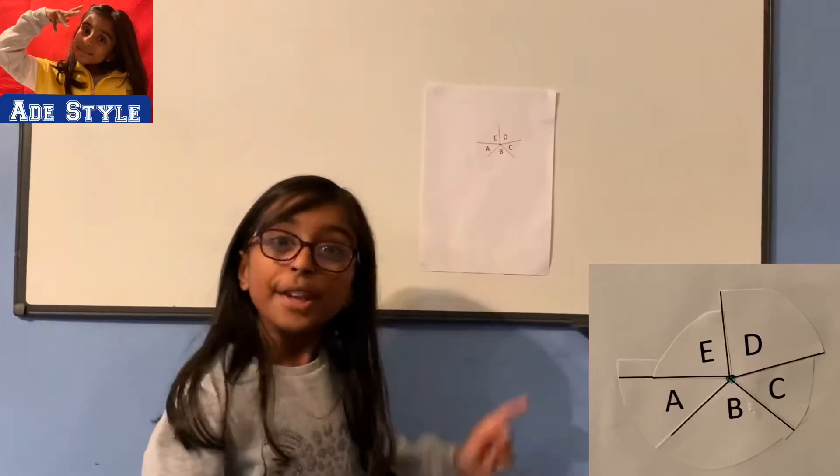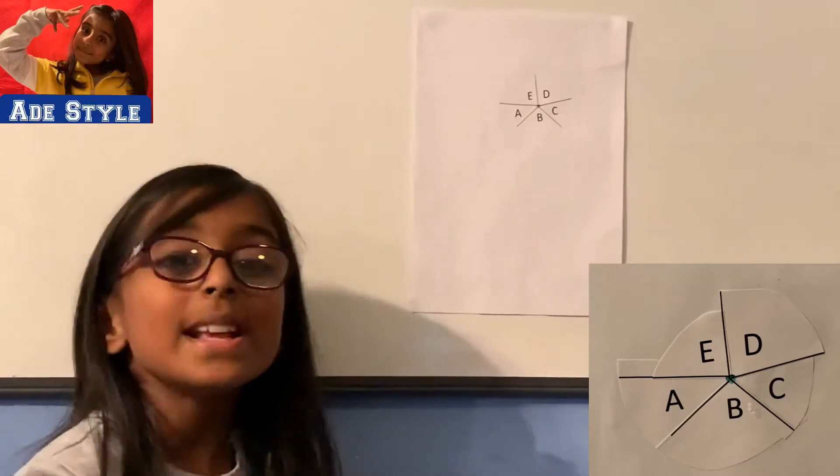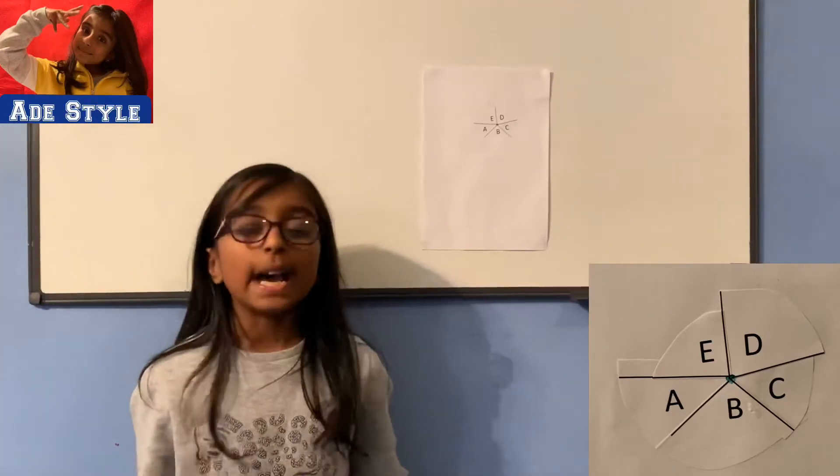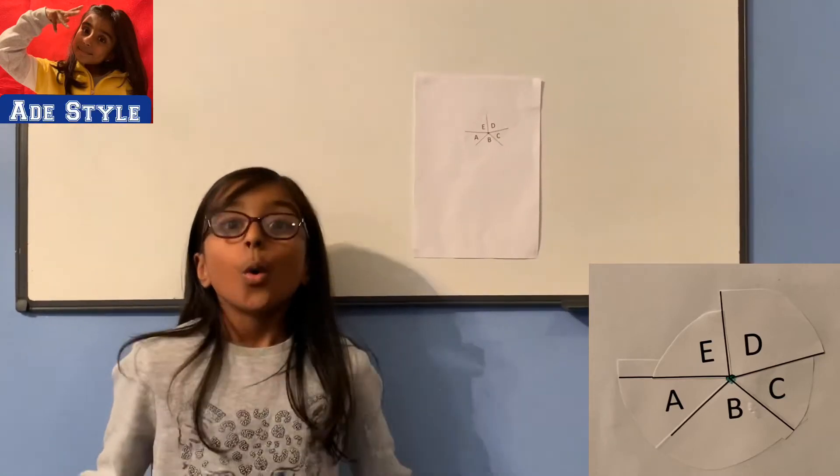This is what I got. You can see it forms a circle. This circle always adds up to 360 degrees. It doesn't matter how many sides the polygon has. The external angles always make a circle.